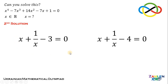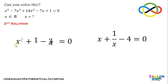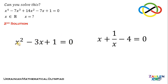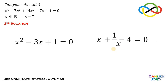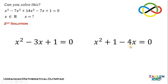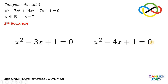For the first equation, x plus 1 over x equals 3. Multiplying all terms by x gives x squared plus 1 minus 3x equals 0, or x squared minus 3x plus 1 equals 0. For the second equation, x plus 1 over x equals 4. Multiplying by x gives x squared plus 1 minus 4x equals 0, or x squared minus 4x plus 1 equals 0.